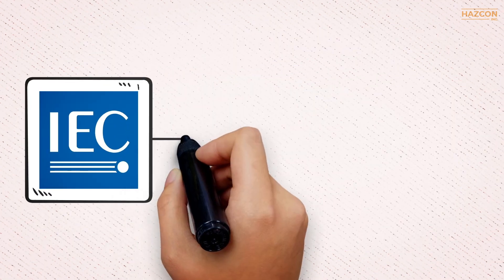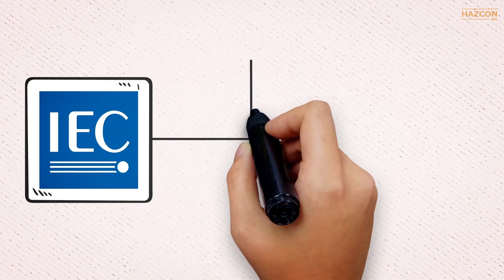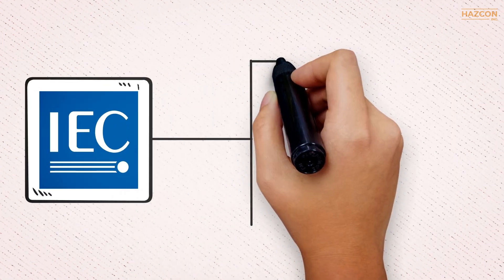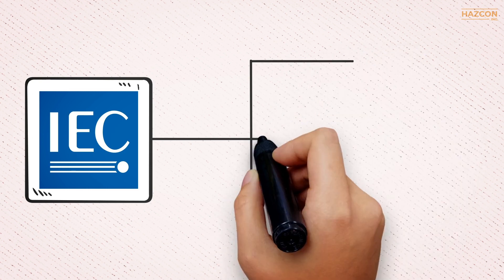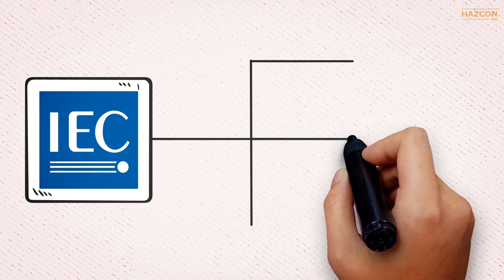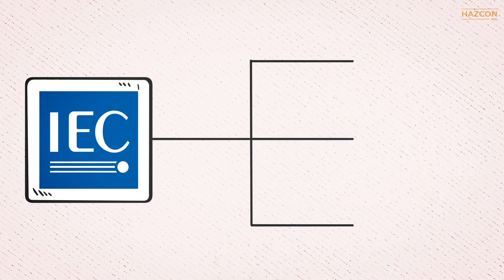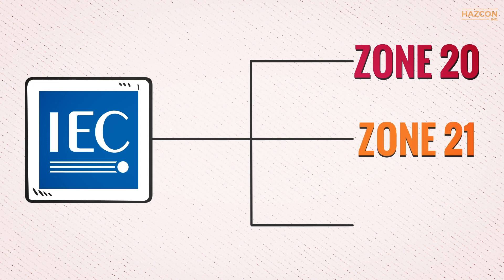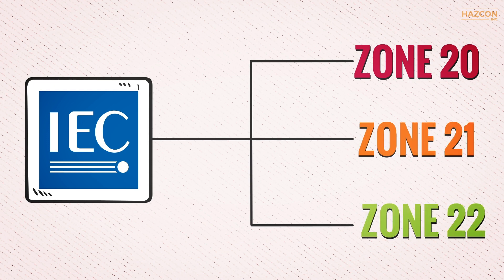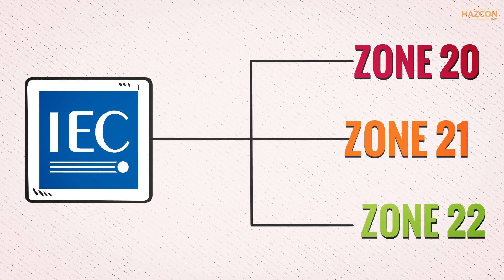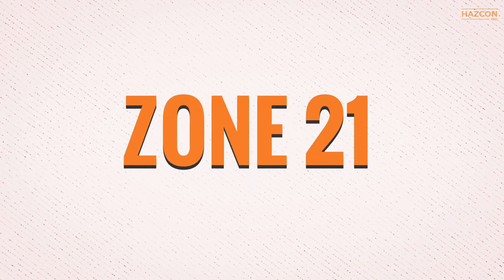As per International Electrotechnical Committee standards, the areas where explosive dusts may be present are categorized into three groups: Zone 20, Zone 21, and Zone 22. This animation is about Zone 21.